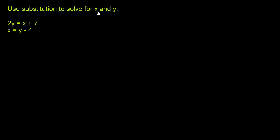Use substitution to solve for x and y. We have a system of equations here. The first equation is 2y is equal to x plus 7, and the second equation is x is equal to y minus 4. What we want to do with substitution is substitute one of the variables with an expression so that we have an equation with only one variable, and then we can solve for it.